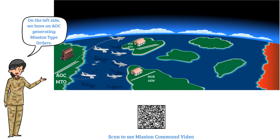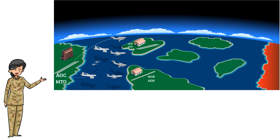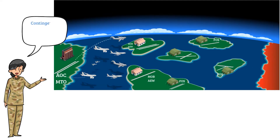As we go right, you have the top and bottom main operating bases functioning as air expeditionary wings. In ACE, we must remember that all bases are fighting positions, not sanctuaries. These main operating bases will have multiple contingency locations, or forward operating sites, which are typically closer to the fight and rely more on logistical support. They are signified by the green huts.